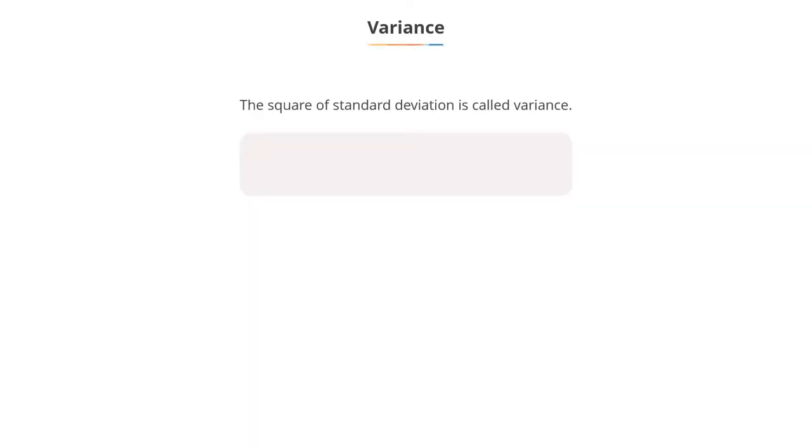Its square is called variance. Variance for the given data set can be obtained using the given formula.